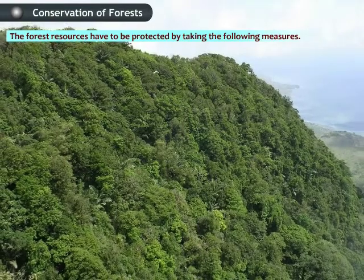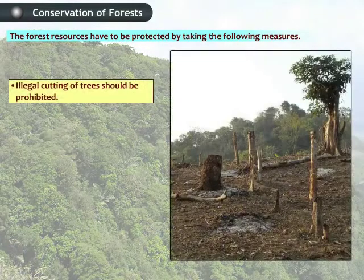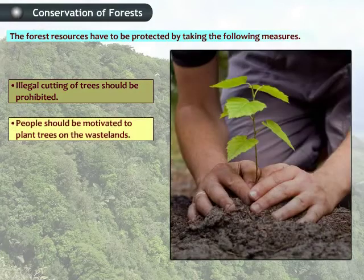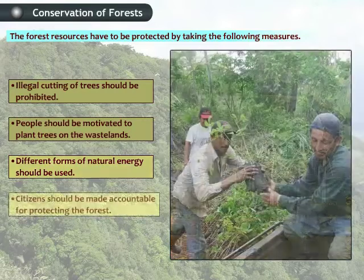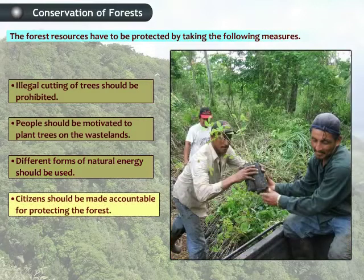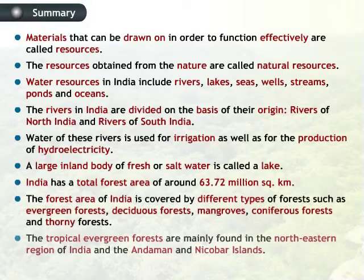The forest resources have to be protected by taking the following measures: illegal cutting of trees should be prohibited; people should be motivated to plant trees on the wastelands; different forms of natural energy should be used; and citizens should be made accountable for protecting the forest. Let us now recap all the important points that we have covered in this module on Water and Forest Resources of India.